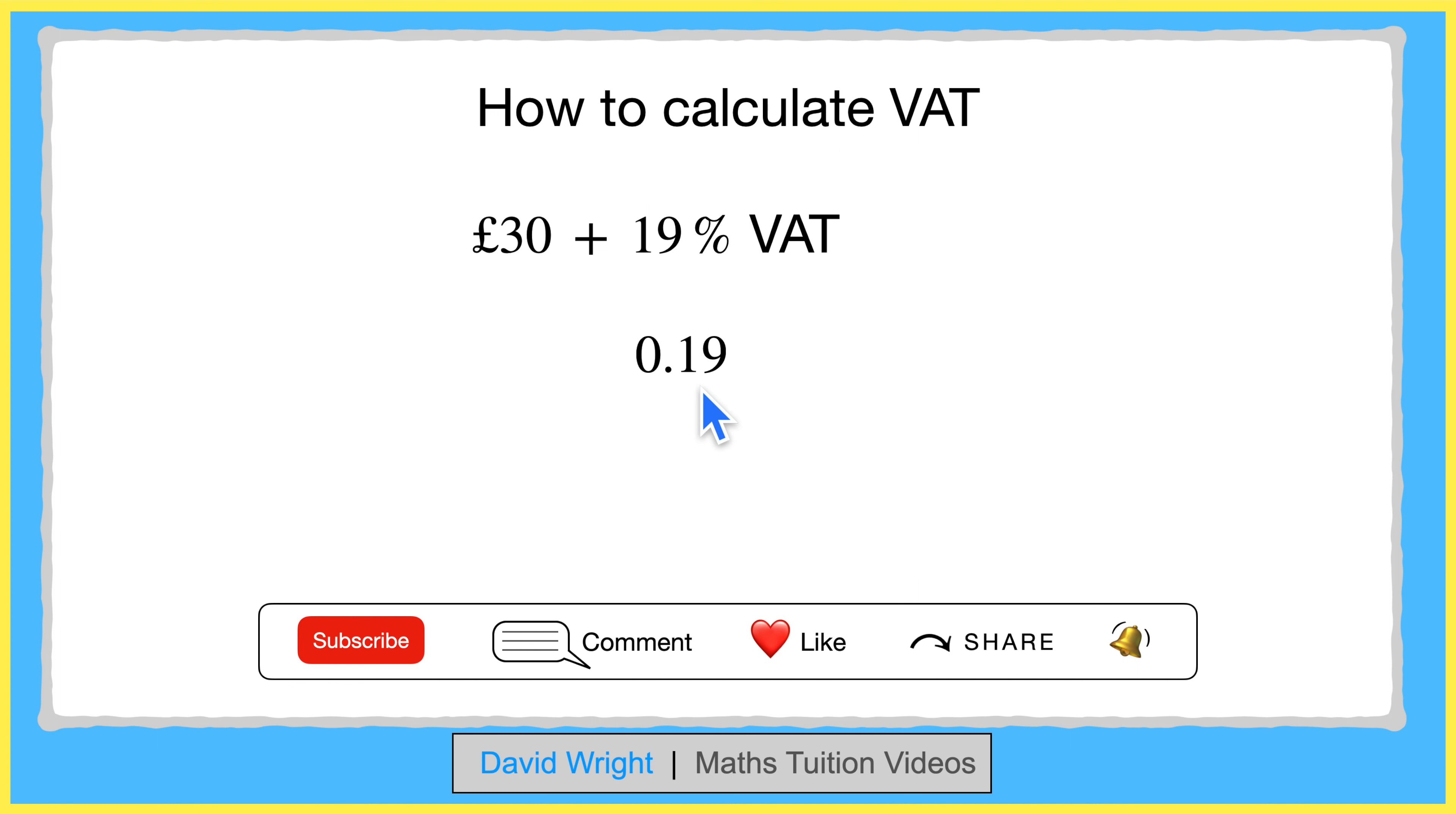Now the original price, which was £30, can be regarded as being one whole. And we need to add our VAT to this, which is 19%, represented by 0.19. So if we add these values together, we get 1.19.